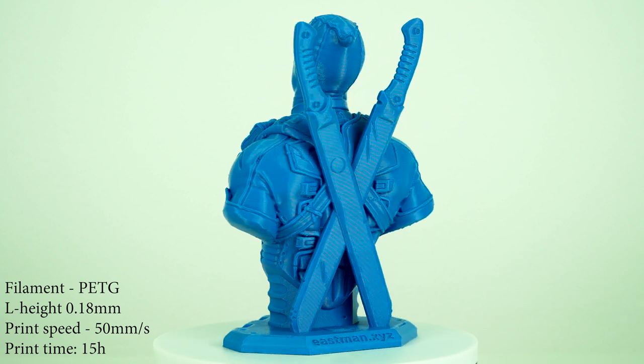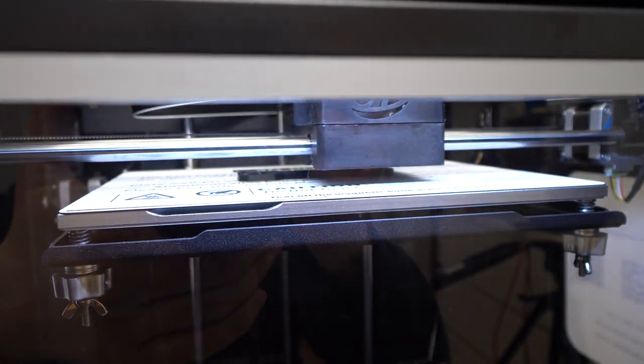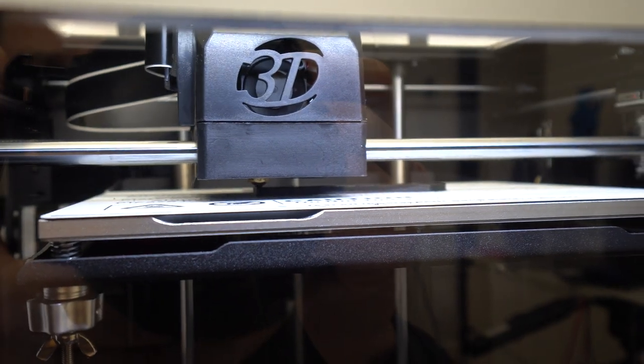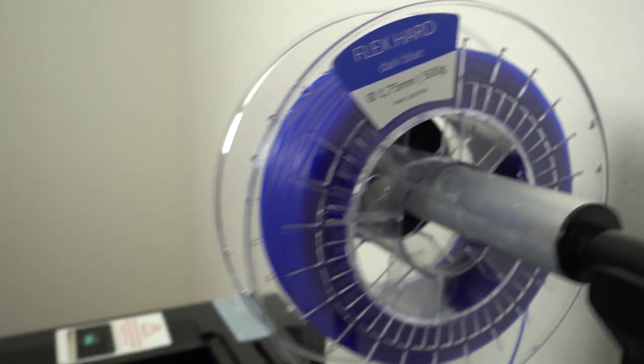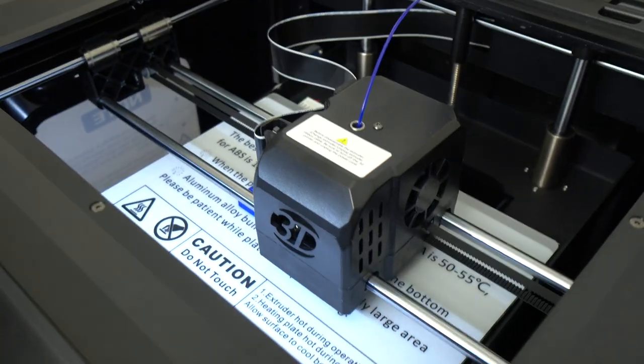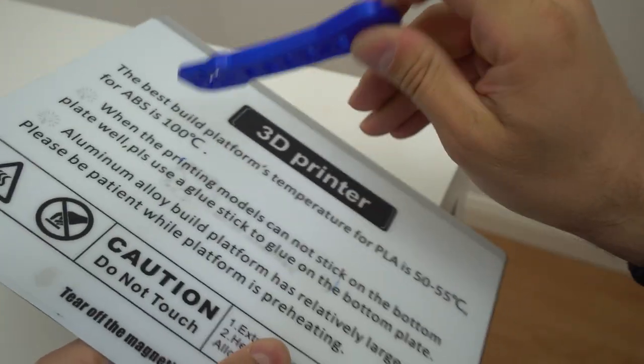And now it's time to test ABS, TPU and nylon. So I quickly printed out a quadcopter arm first in ABS which turned out perfect with zero warping. Next, I printed out the same print but this time in flexible filament. And it turned out great as well.